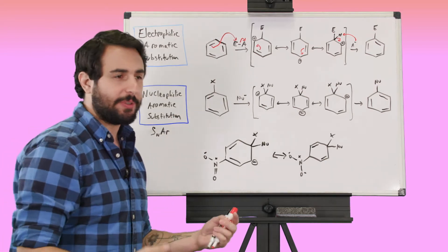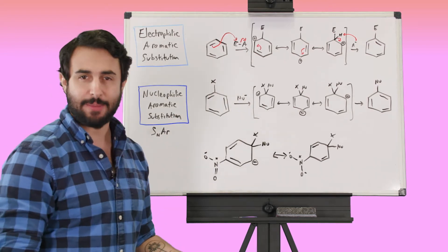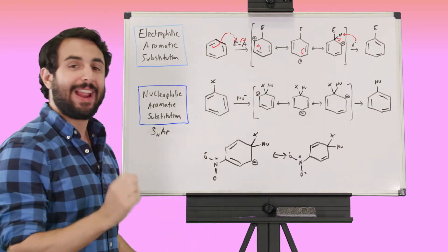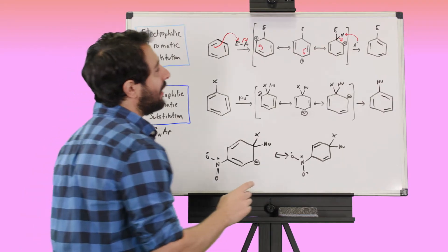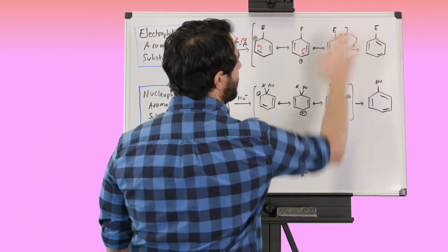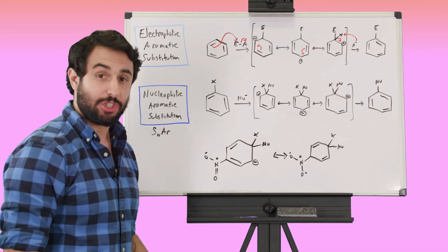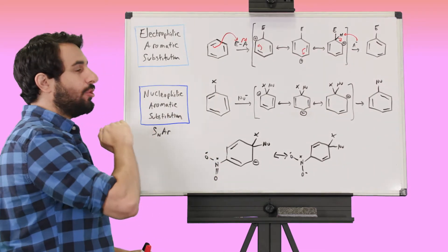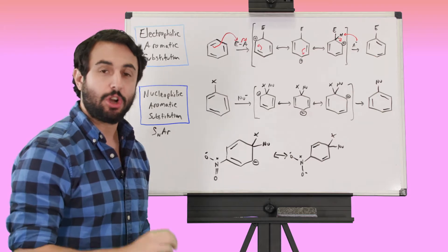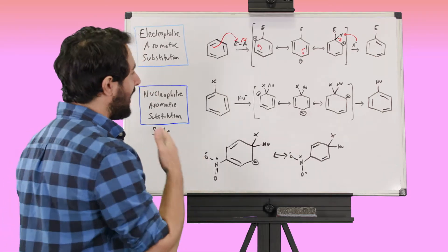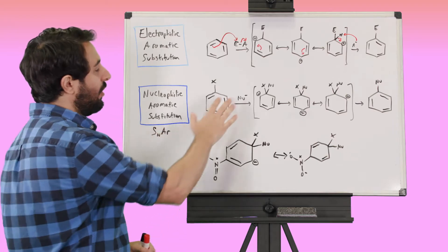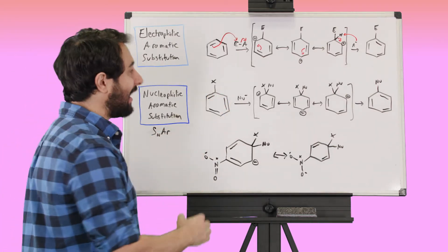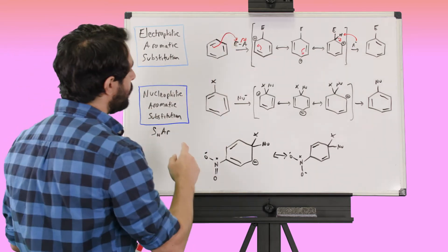We went through Friedel-Crafts chemistry and halogenation — all utilizing electrophilic aromatic substitution. But now we want to learn something different. If we throw a halogen on there via EAS, we can then do a completely different type of reaction called nucleophilic aromatic substitution, which involves the molecule reacting with a nucleophile.